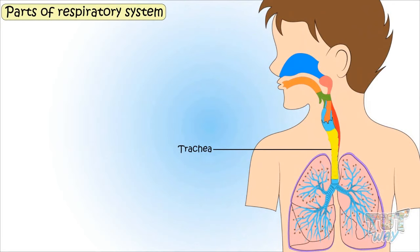Trachea: The trachea is shaped like a tube and is approximately 5 inches in length. It is also referred to as the windpipe, and it connects the larynx to the bronchi. Air also gets filtered here before entering the lungs. The inner lining of the trachea produces mucus, which traps harmful particles from the air we breathe in before they enter the lungs.